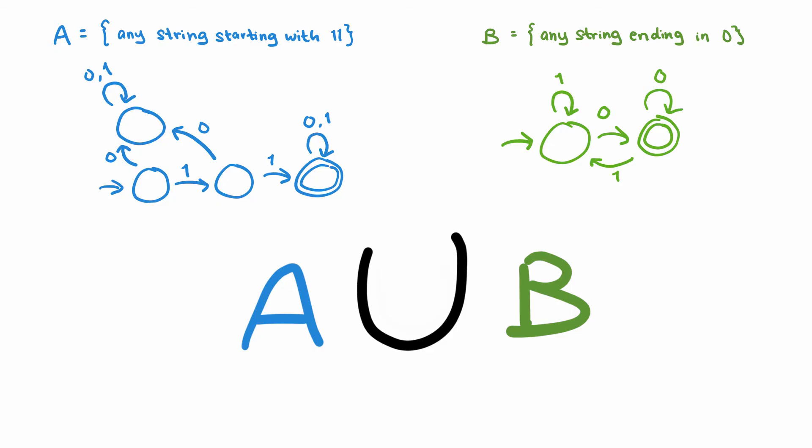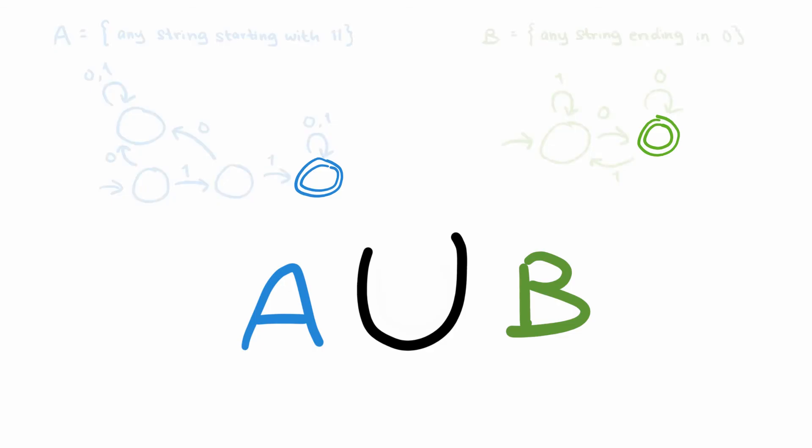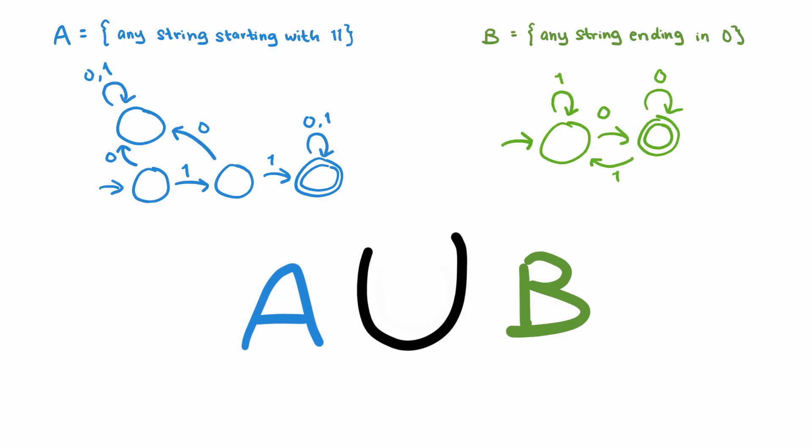Then we know that at the end of an input, we should enter the accept state of one of these DFAs. Knowing this, how can we create a new machine for A union B?